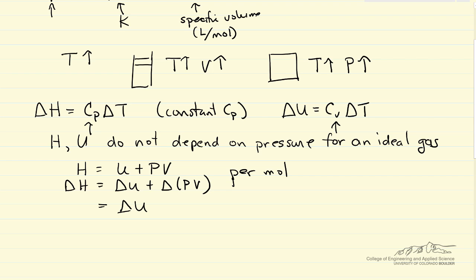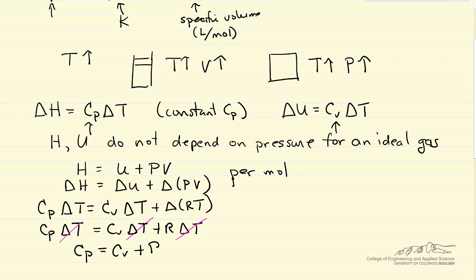And from our ideal gas law, that means I can write this as delta U plus delta RT. I can write delta H as CP delta T. I can write delta U as CV delta T. And the right side, since R is a constant, becomes R delta T. Now you can see I can cross out delta T, and this says constant pressure heat capacity is the constant volume heat capacity plus the ideal gas constant.